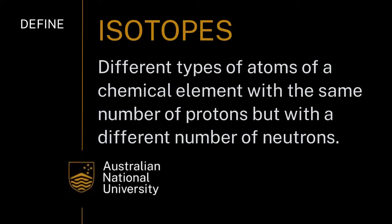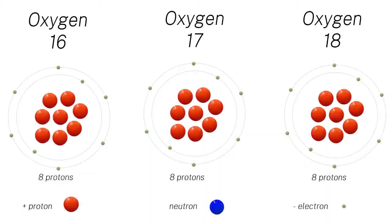We can do this because not every atom of oxygen is exactly the same. There are three different isotopes of oxygen which occur naturally on Earth. In its most common form, oxygen has eight protons in its nucleus and eight neutrons. All oxygen atoms have eight protons, but the amount of neutrons can vary between individual oxygen atoms. These variations in neutrons change the atomic weight of the oxygen atom and are called isotopes.